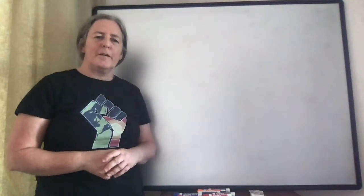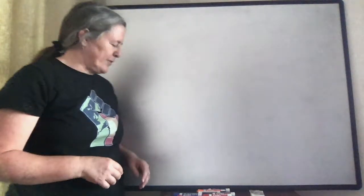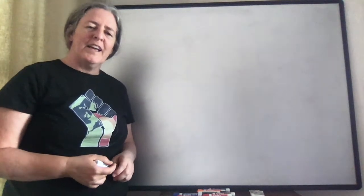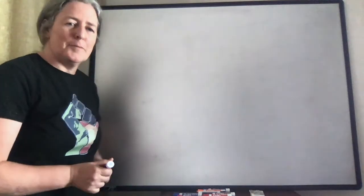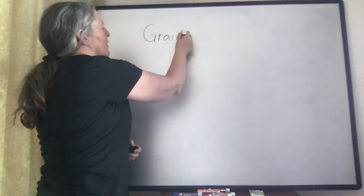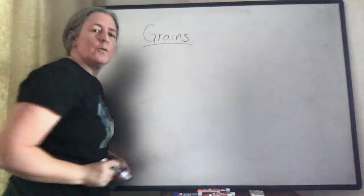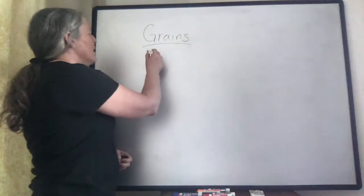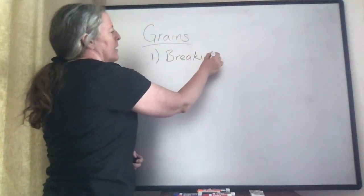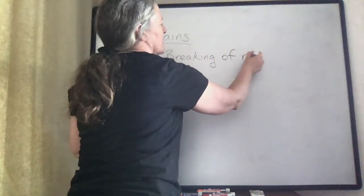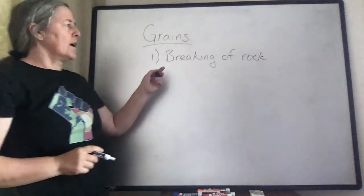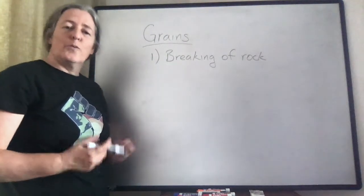I'm going to talk a little bit about the origins of grains. They're the sediment that gets transported and can eventually become sedimentary rocks. We have three basic ways that we can get grains. One is the breaking up of prior rock, pre-existing rock. And this process of breaking a rock into smaller grains is weathering.